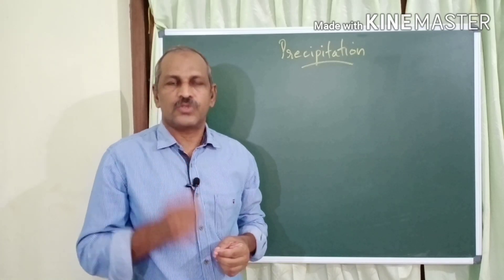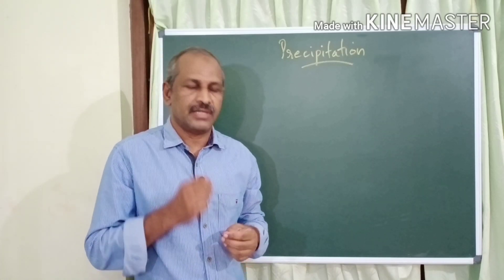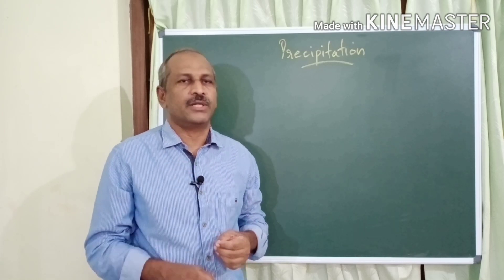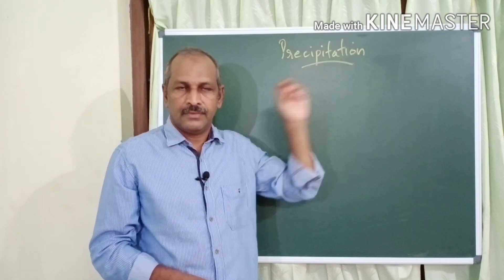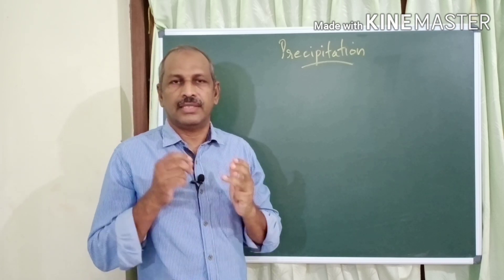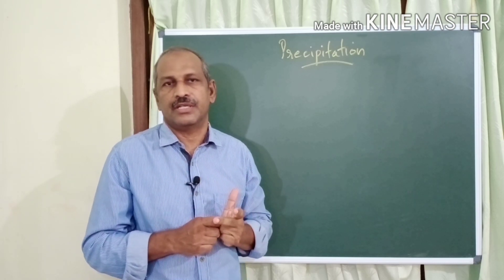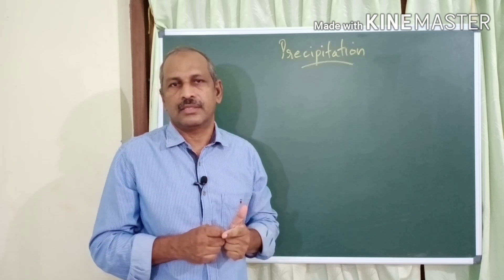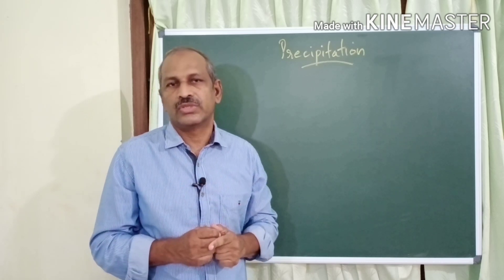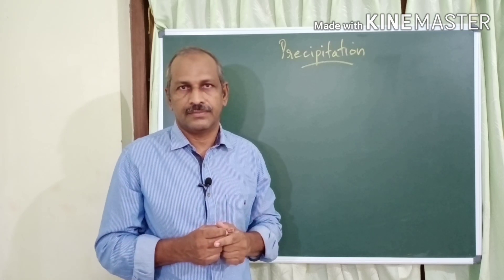Hello, it's me Mr. Mustafa. Welcome to my geography class. Today we will discuss the topic of precipitation — what is precipitation, what are the different forms of precipitation, and how do they occur. This is from the chapter 'Sun, the Ultimate Source,' 9th Standard Geography, Kerala Syllabus.